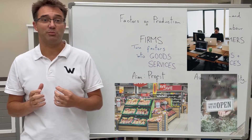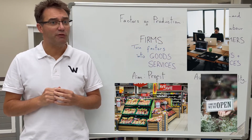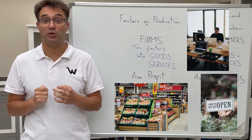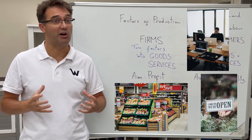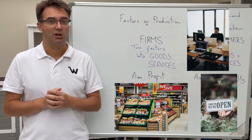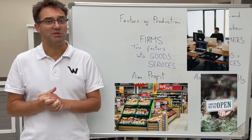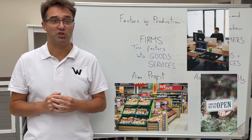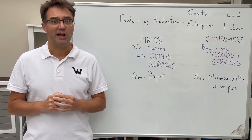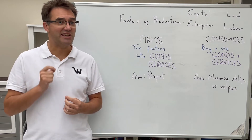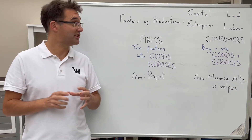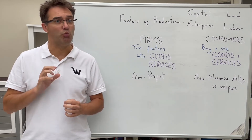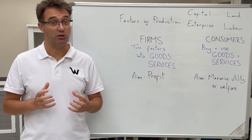Another participant is producers. Although these are often referred to as firms, it's actually any person, business or country that makes, grows and supplies a good or service. We assume that producers will aim to maximise their profits, making the most money that they can from the resources they have available. In a future video we'll look at how this aim of firms works together with the decisions of consumers to determine what's produced, in what amounts, sold at what price, and to who.